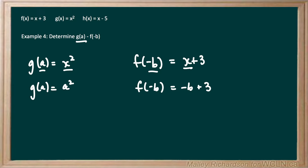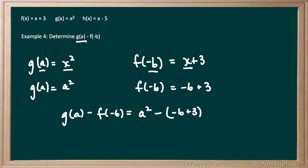Now we have g of a and f of negative b, so we subtract these two values: g of a minus f of negative b, which is a squared minus (negative b plus 3). We have a negative sign outside the brackets, so we use distribution laws. Negative 1 times negative b gives positive b, and negative 1 times positive 3 gives negative 3. So g of a minus f of negative b equals a squared plus b minus 3.